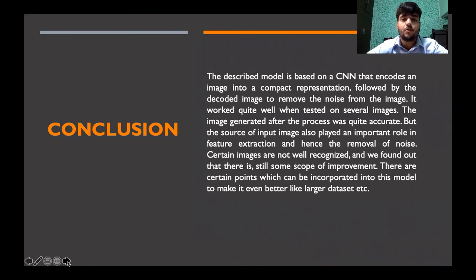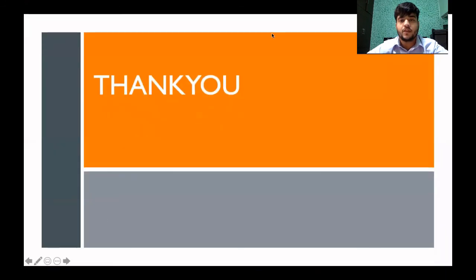Conclusion: the described model is based on CNN that encodes an image into a compact representation, followed by decoding of the image to remove the noise. It worked quite well when tested on several images. The image generated after the process was quite accurate, but the source of the image also played an important role in feature extraction and the removal of noise. Certain images are not well recognized and there is still some scope of improvement. There are certain points which can be incorporated to make this model work even better with large datasets as well. Thank you.